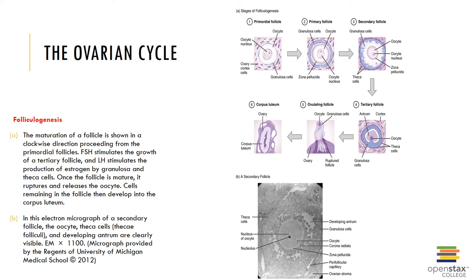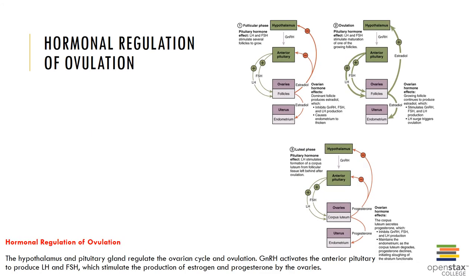The follicle thickens, forming a secondary follicle, and a fluid-filled cavity called the antrum begins to form. As the antrum continues to expand, the granulosa cells become isolated on a stalk forming the corona radiata around the oocyte, distinguishing the structure as a Graafian or vesicular follicle. Ovulation occurs generally around day 14; the antrum swells, causing the ovary wall to rupture and expel the secondary oocyte and its corona radiata.